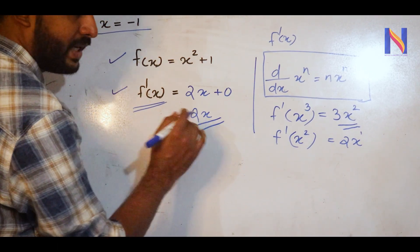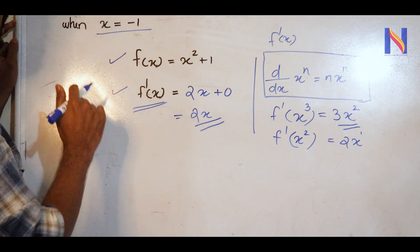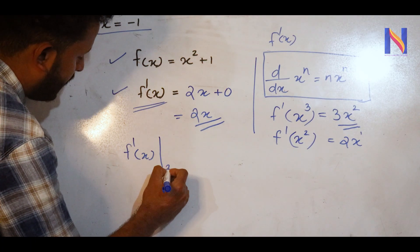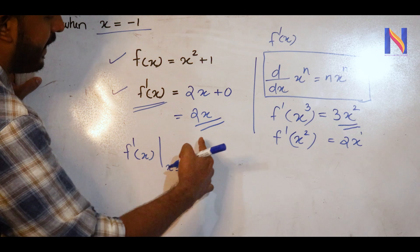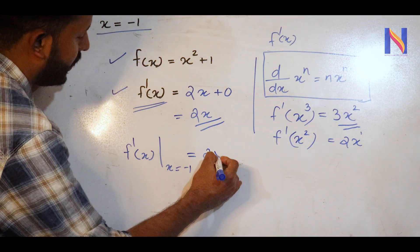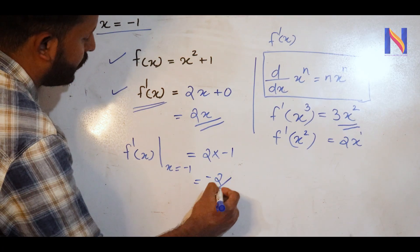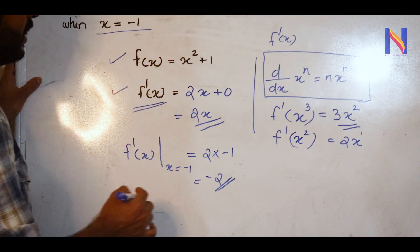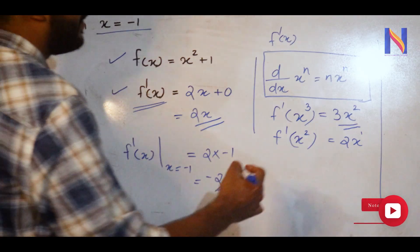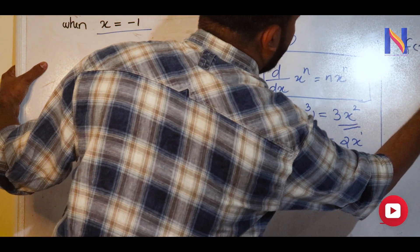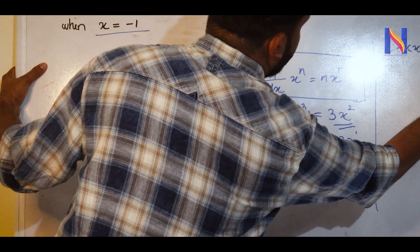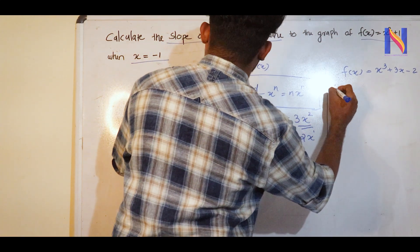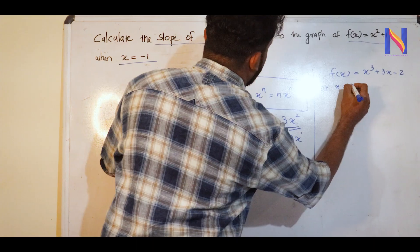Now, substituting x = -1. This is the slope. So the slope equals 2(-1) = -2.